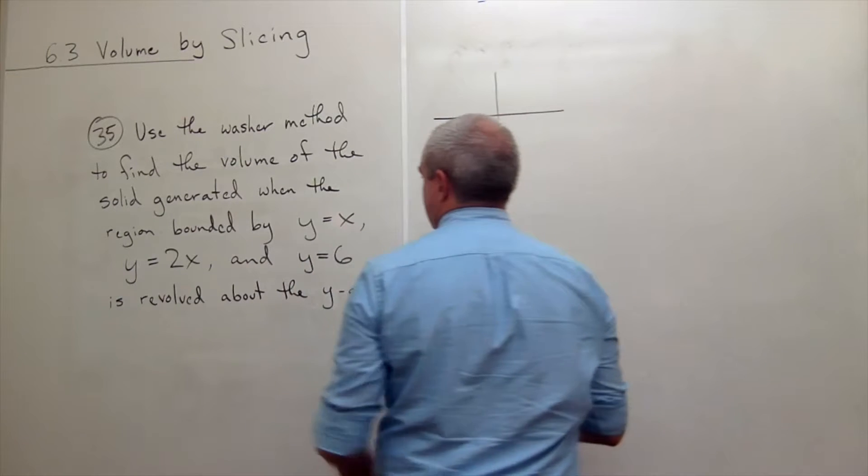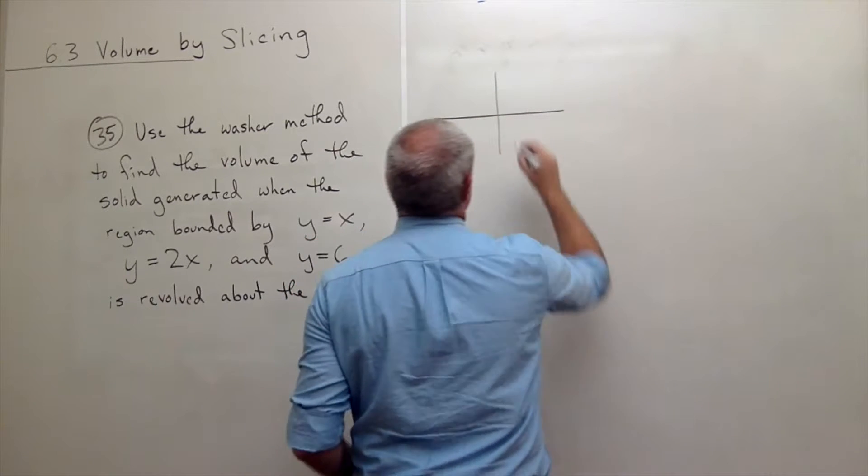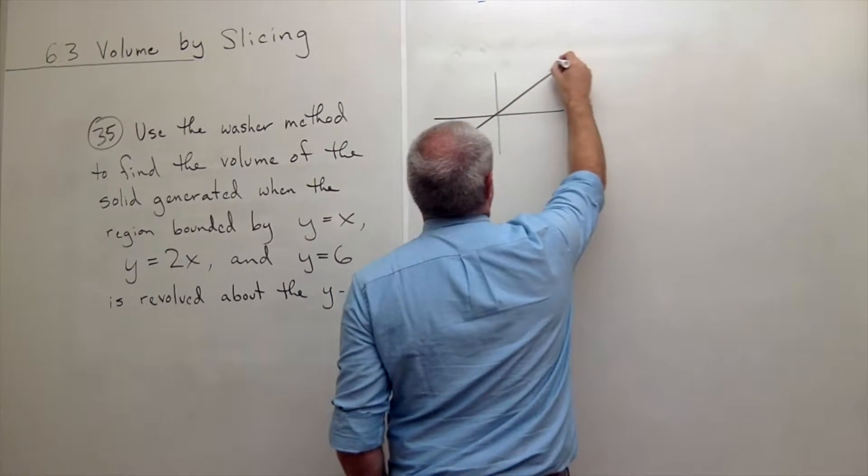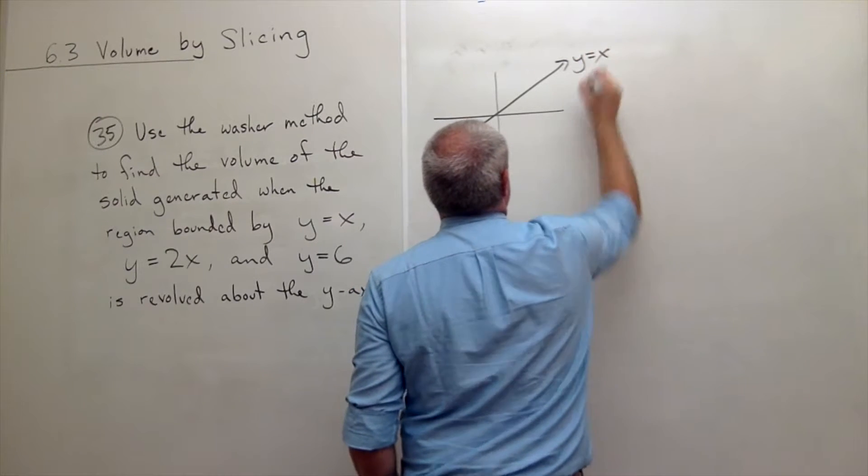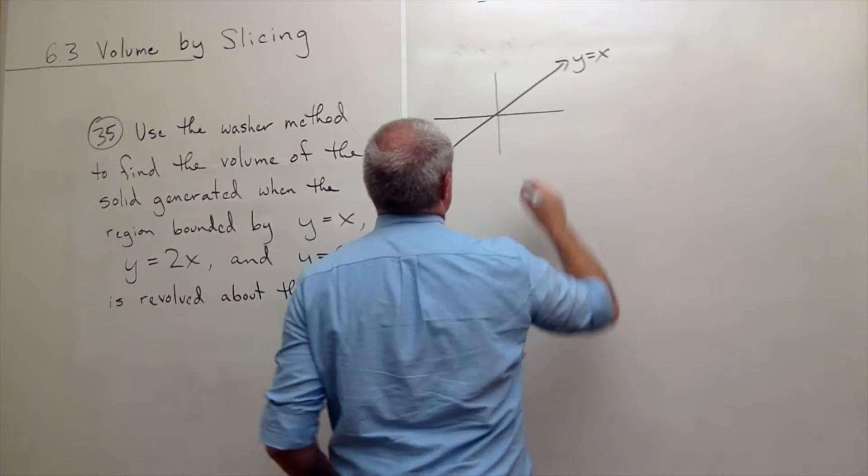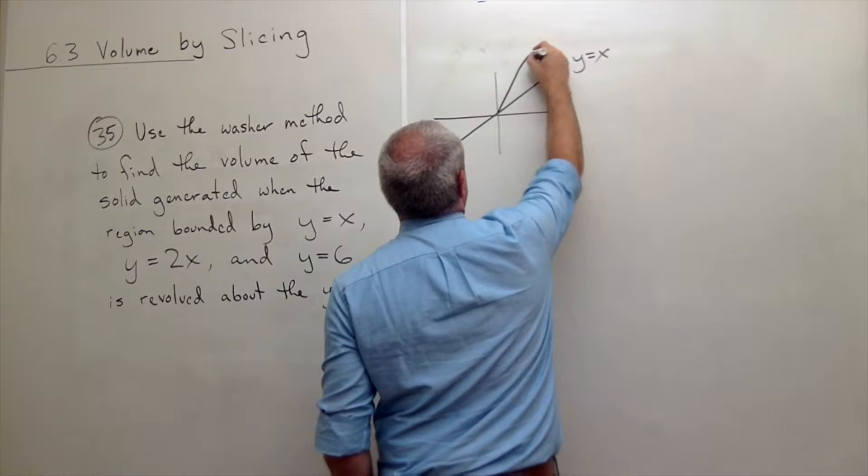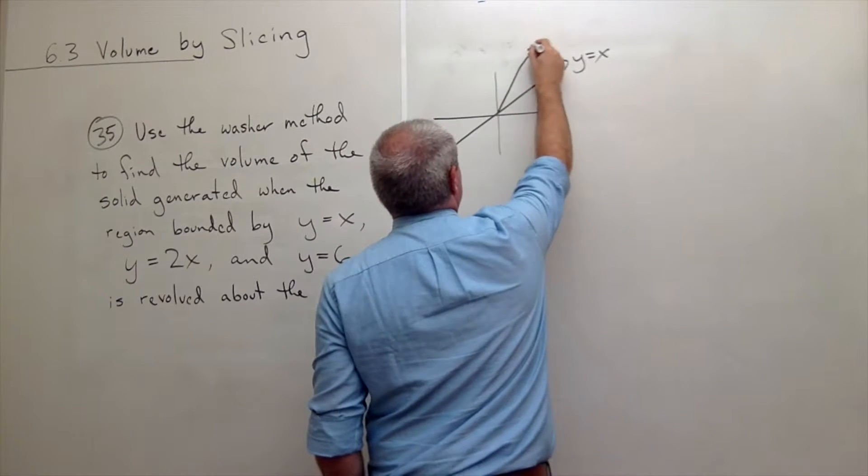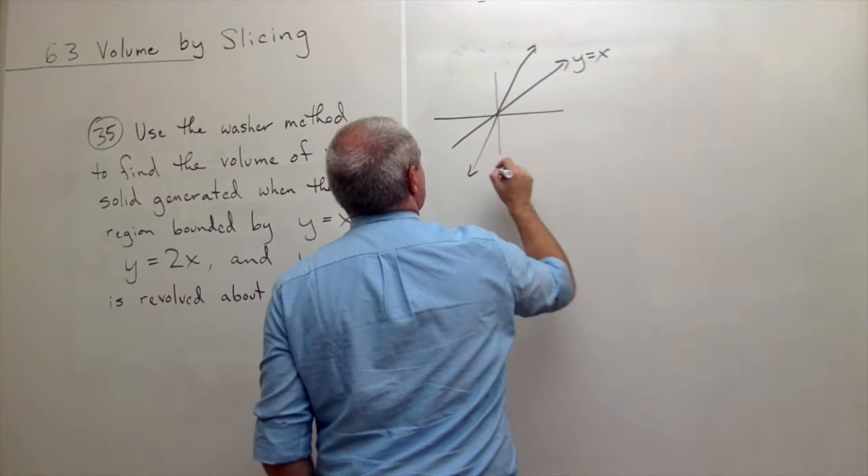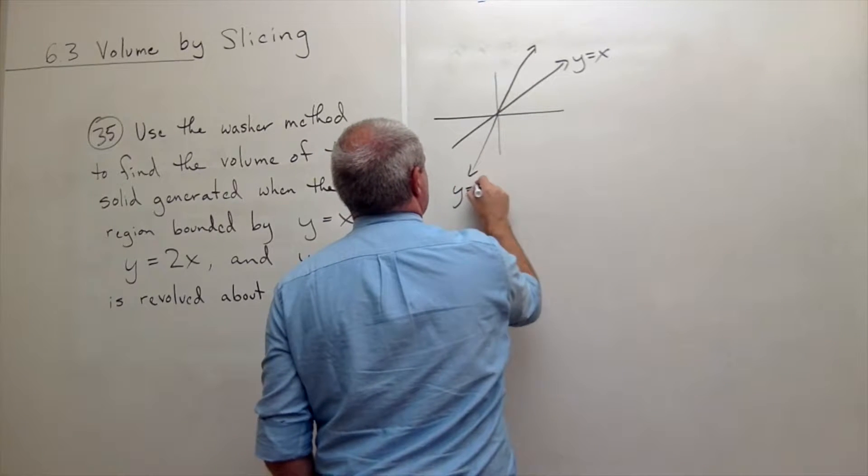Here's my x and y axis. I've got the function y equals x. This is y equals x. We've got the function y equals 2x which has a slope of 2.